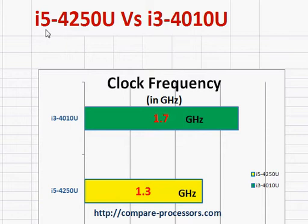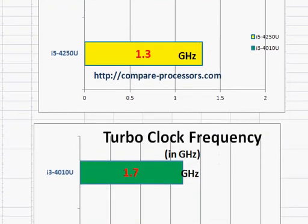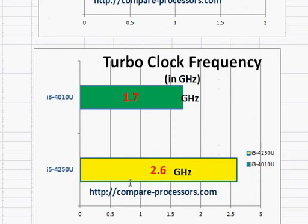Now, let's take a look at some of the basic specifications. You can see that the i5-4250U is actually clocked lower than the i3-4010U. However, the i5-4250U has a much higher turbo clock frequency, and in the real world this is what benefits you — it keeps the processor relatively lower-powered, and whenever required, you have the processing power to complete your given task.